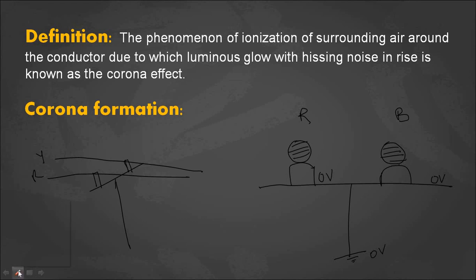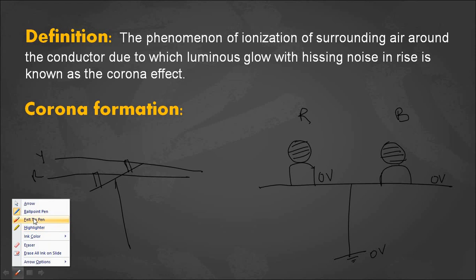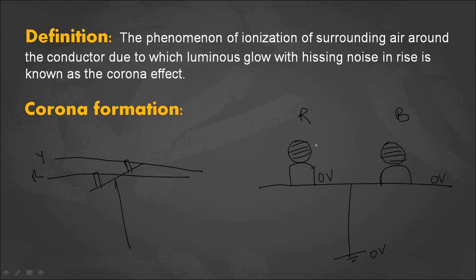The medium between the two conductors and between the conductors and the supporting tower is air. This air acts as a dielectric medium between the two conductors. Air has a dielectric strength of 30 kV per centimeter. If the voltage is greater than this dielectric strength, the air will start conducting.